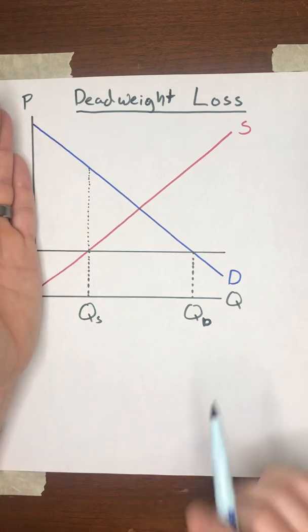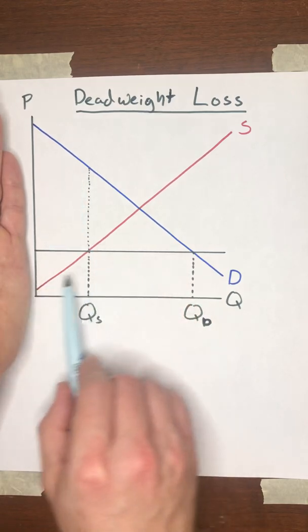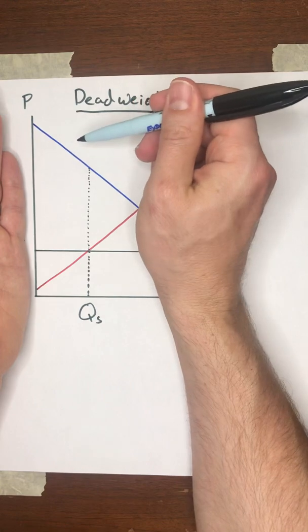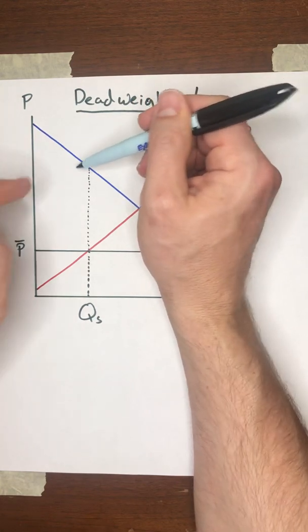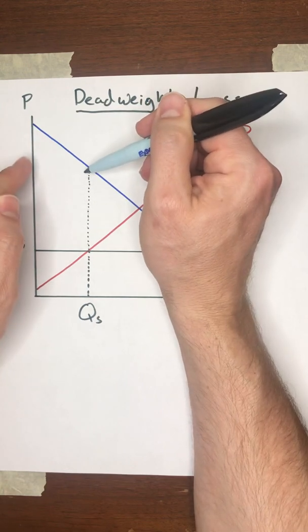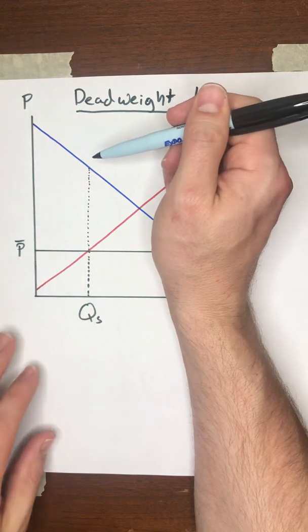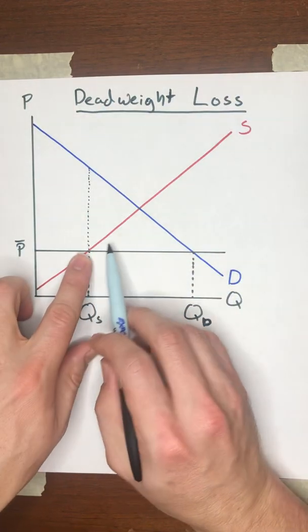And so far, everything we've talked about has been to do with what's to the left of this quantity supplied. Basically, we've been thinking about how much consumer surplus will there be, how much producer surplus, will any of this area on the left be lost. I'm going to ignore this left-hand part of the graph for the purposes of this video. We're going to focus on what happens to the right.